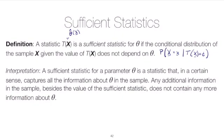Recall from class that a sufficient statistic, which we call t of x to denote it's some function of our sample, is a sufficient statistic for theta if the conditional distribution of the sample given the value of t of x does not depend on theta. In the discrete case, if the probability that our sample equals some set of values given that the sufficient statistic equals some value has no thetas in it, then t of x is a sufficient statistic.